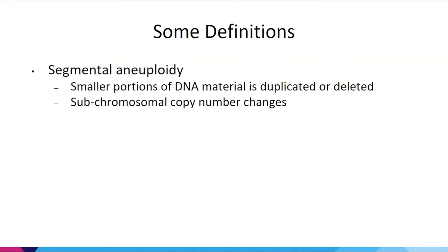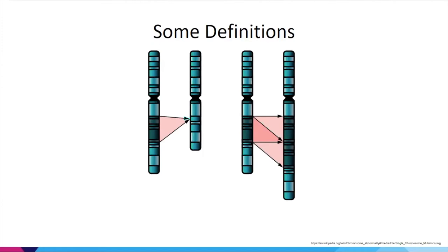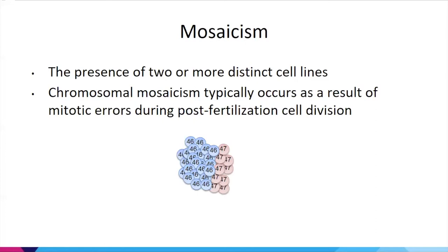There's also segmental aneuploidy, which refers to smaller portions of DNA material that are either duplicated or deleted — sub-chromosomal copy number changes, smaller sections rather than the entire chromosome. Mosaicism indicates the presence of two or more distinct cell lines; some cells have 46 chromosomes and others have 47. This typically results from mitotic errors after fertilization during cell division.